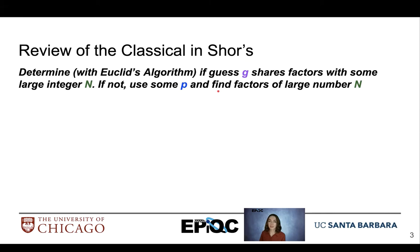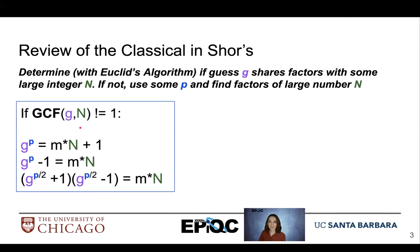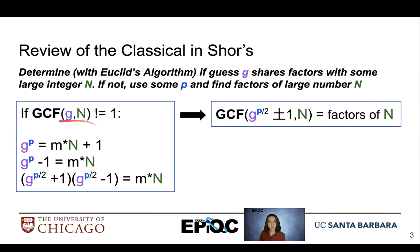So if the greatest common factor of g and n is not equal to 1, which is highly likely, we are going to have to find some value p that will allow us to find factors of n. We'll cleverly rearrange this information in the following way so we know that the greatest common factor of g raised to some p divided by 2 plus or minus 1 and n will equal factors of n.